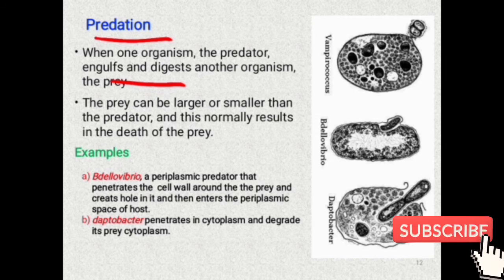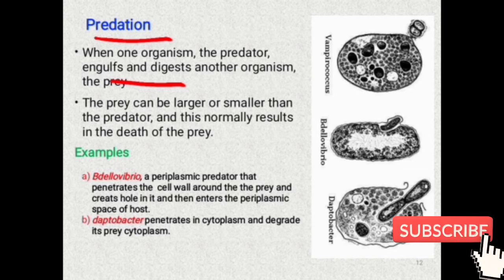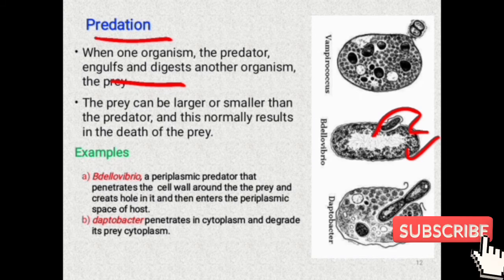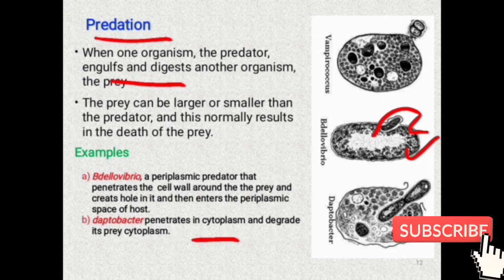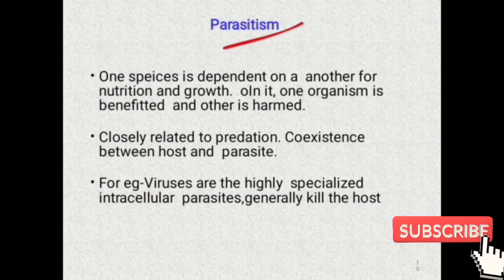Negative interactions first include predation. In predation, one organism — the predator — engulfs and digests another organism — the prey. The prey can be larger or smaller. An example is Bdellovibrio, a bacterium which predates other microorganisms. This bacterium extends its cell wall, taps the prey organism, creates a hole, associates with the periplasmic space of the prey, then penetrates the cytoplasm and consumes it.